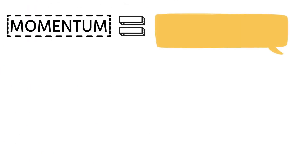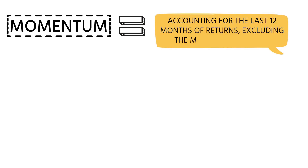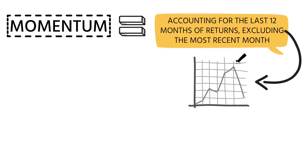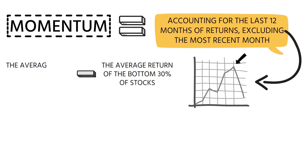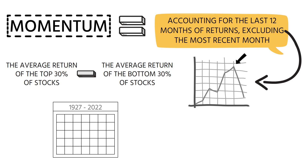We calculate the momentum factor by accounting for the last 12 months of returns, excluding the most recent month. The exclusion is because the scholars observed a strong reversal in the most recent month. We subtract the average return of the bottom 30 percent of stocks from that of the top 30 percent to determine the momentum factor. For 1927 through 2022, the annual average return of the momentum factor was 9.6 percent.